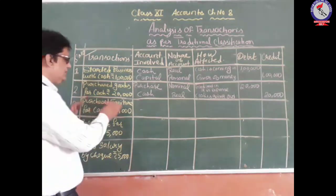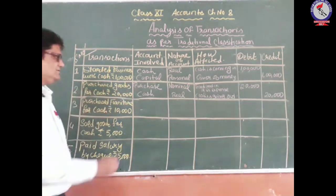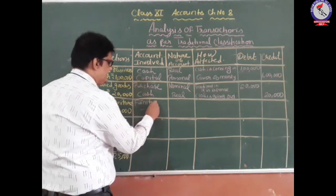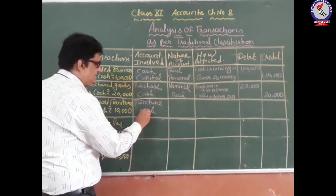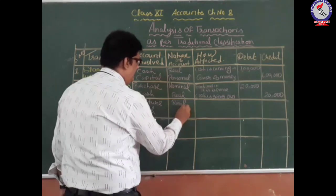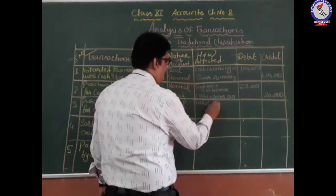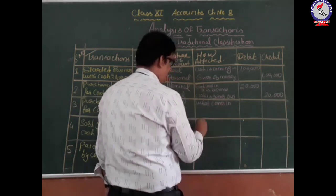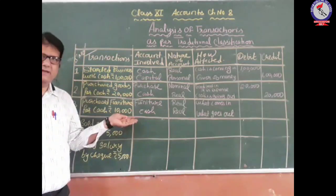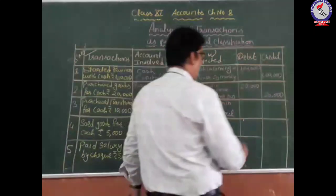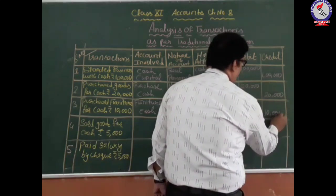Third transaction: purchase furniture for cash. The two accounts involved: what we have purchased is not goods for resale — it is an asset, furniture. So the account involved is furniture account, and for cash, another account is cash. Both furniture and cash are examples of the real category. What comes into the business should be debited, so furniture account should be debited with 10,000 rupees, and cash, which goes out, should be credited with 10,000 rupees.